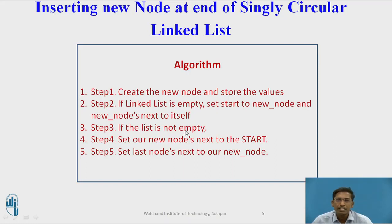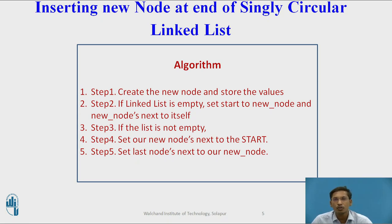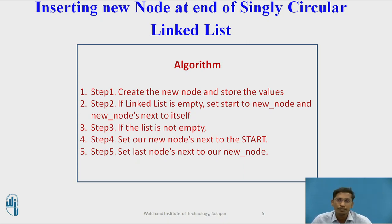Step 3: if the linked list is not empty, meaning some nodes are already present, traverse from the first to the last node, set the new node's next part to start, and set the last node's next part to the new node. You cannot point directly to the last node because there is only one global pointer called start. You have to traverse from the first node to the last node using a temporary variable, since there are no previous pointers in a singly circular linked list. Once temp is pointing to the last node, connect temp with the new node and new node with start.